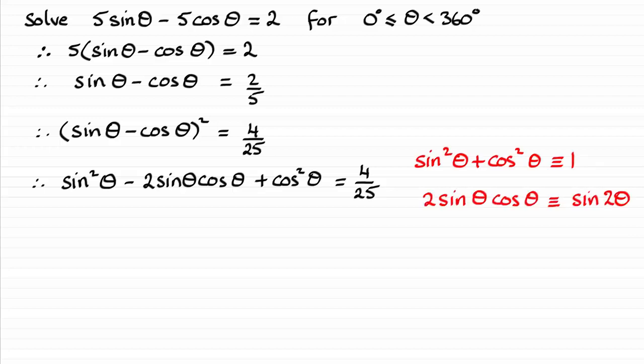So that means that I could take 4/25 from both sides and I'll add what is effectively here sin2θ to both sides. So if you do that, you're going to get this result here. Remember that one came from sin²θ + cos²θ.